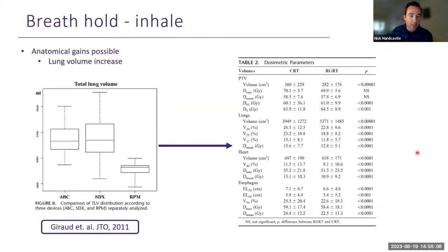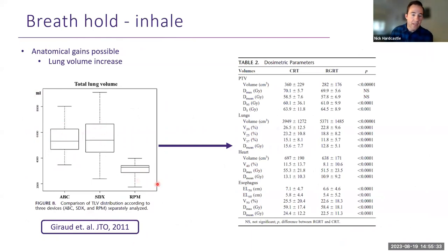Inhale breath hold can be quite beneficial. A randomized study from France compared inhale breath hold with RPM gating on exhale and found that lung volume is much larger when using an inhale breath hold. All lung DVH parameters are much lower, and in that study this resulted in a reduction in acute side effects — so there can be a key benefit by doing an inhale breath hold.